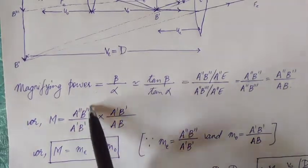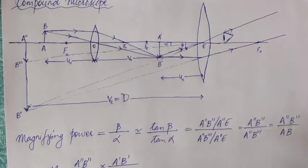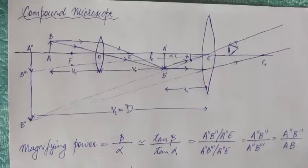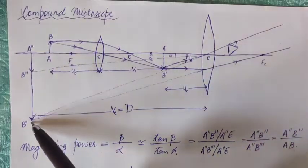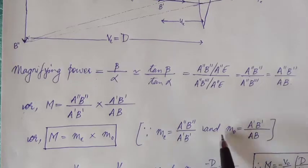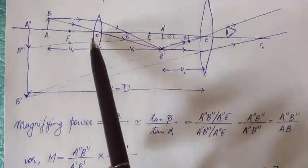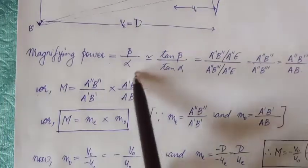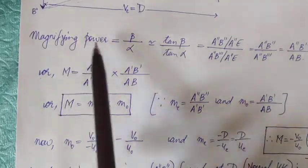The fraction A''B'' divided by A'B' is the linear magnification of the eyepiece, ME. Linear magnification is the size of the image formed divided by the size of the object for that lens. For the eyepiece, the image is A''B'' and the object is A'B', so ME equals A''B'' / A'B'. Similarly, A'B' divided by AB is the linear magnification of the objective, M0. So the magnifying power M equals ME times M0 — this is the general formula for the magnifying power of a compound microscope.